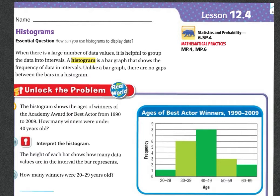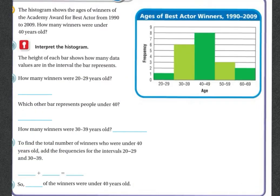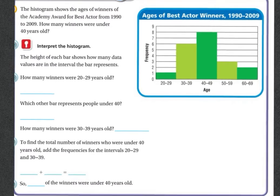Let's unlock the problem. The histogram shows the ages of winners of the Academy Awards for Best Actor from 1990 to 2009. How many winners were under 40 years old? So interpreting the histogram, the height of each bar shows how many data values are in an interval the bar represents.